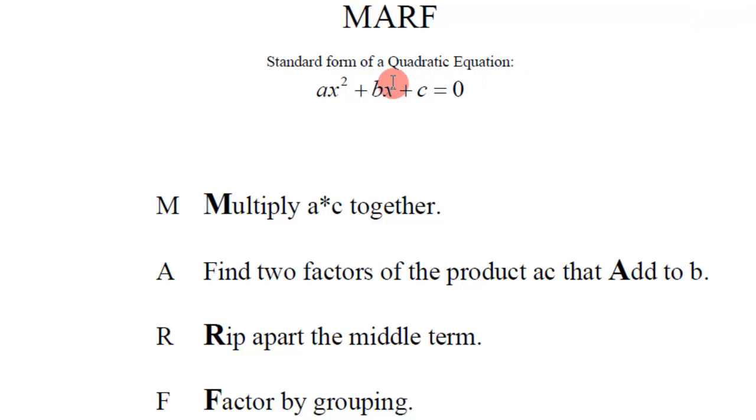In this video we're going to look at factoring quadratics that have the leading coefficient not 1. So for example it might be a 5, a 6, or a 3, but you can't factor it out from all three terms.